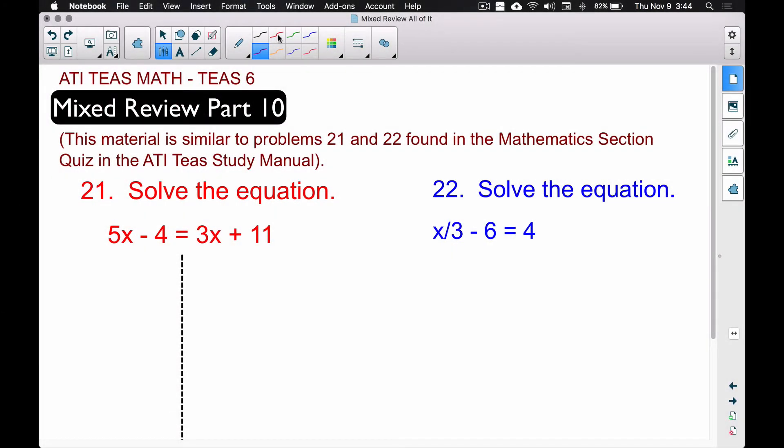In this video, we're going to look at two problems that are similar to problems 21 and 22 found in your ATI TEAS study manual underneath the mathematics section's quiz. We want to solve some equations, and the goal for any equation you need to solve on the TEAS test is to get the variable by itself on one side of the equal.